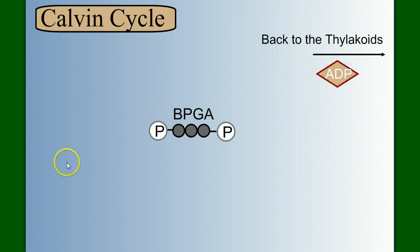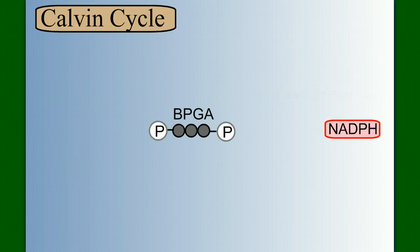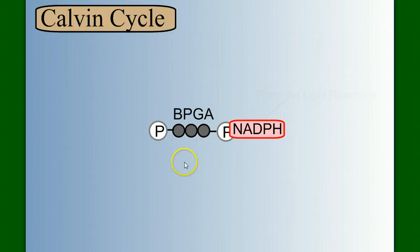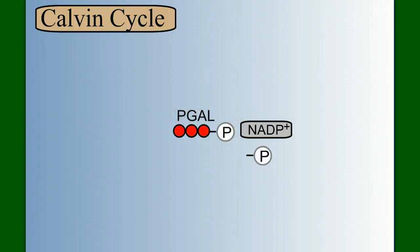So now we have BPGA. BPGA combines with NADPH, also from the light reactions. And when it does, that NADPH, remember what NADPH was carrying? It's carrying a high-energy electron that got boosted by light energy, and it's carrying a hydrogen or a proton. So the NADPH is going to donate that high-energy electron and hydrogen to BPGA, and convert it into PGAL, or phosphoglyceraldehyde.